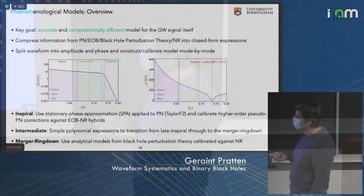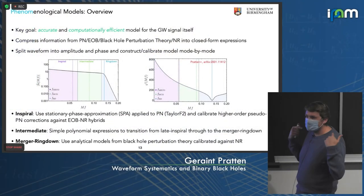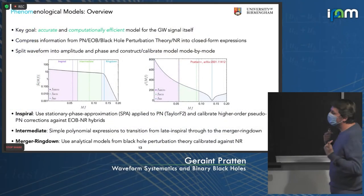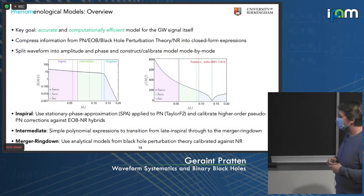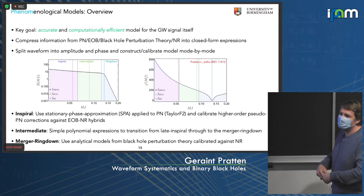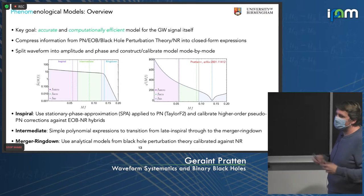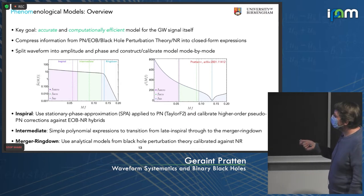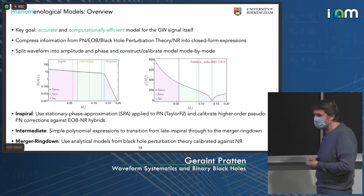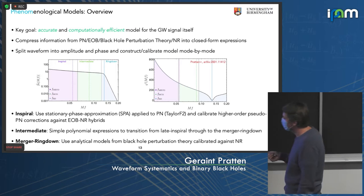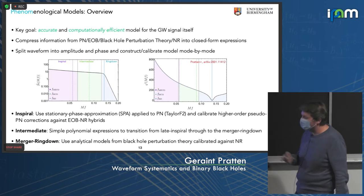For the merger-ringdown, we appeal to black hole perturbation theory. This is something we can do pretty reasonably well, and we can calibrate against nonlinear features from the early merger and against numerical relativity. The schematic approach to constructing various models is essentially the same between all waveform families.